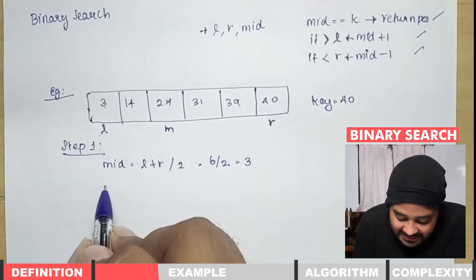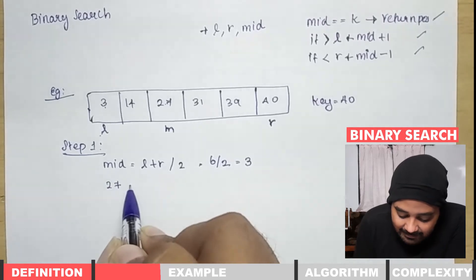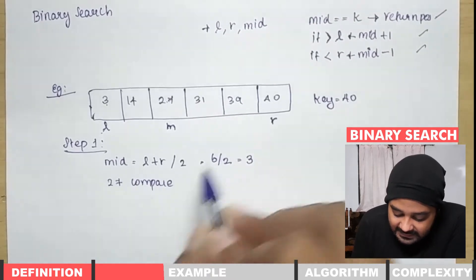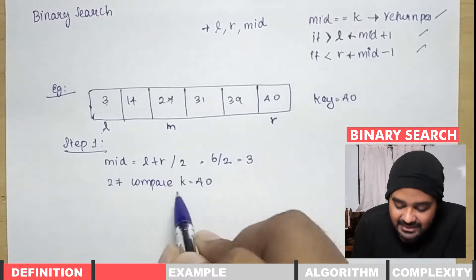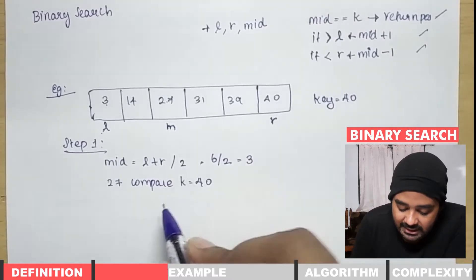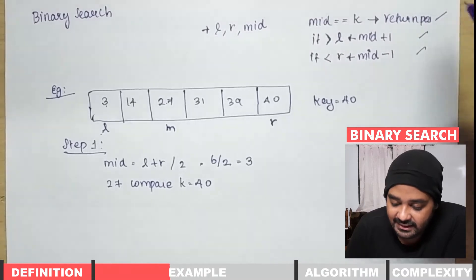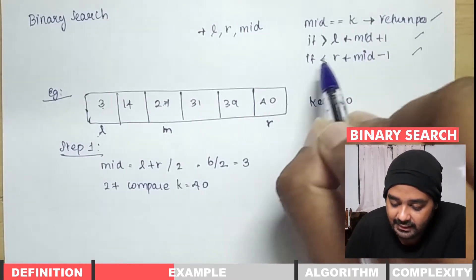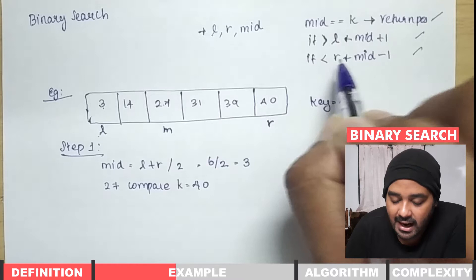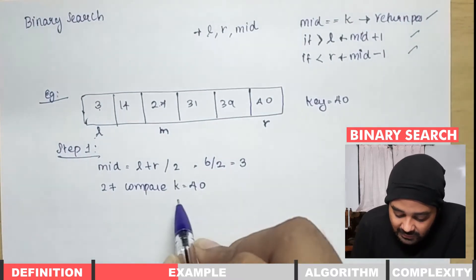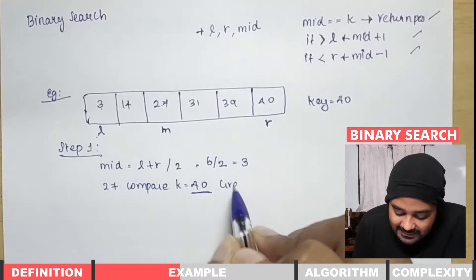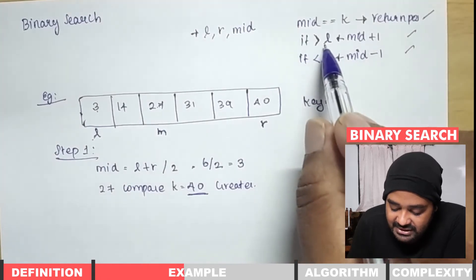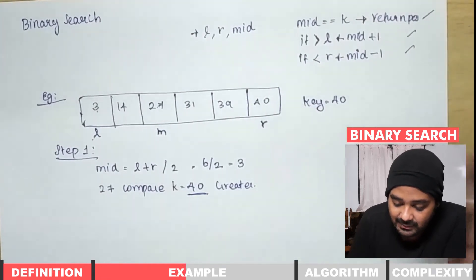We take 27 and compare it with the search key, which is 40. Applying our three conditions: if equal we return, if greater we alter L, if lesser we alter R. Since 40 is greater than 27, we change L to mid plus 1.